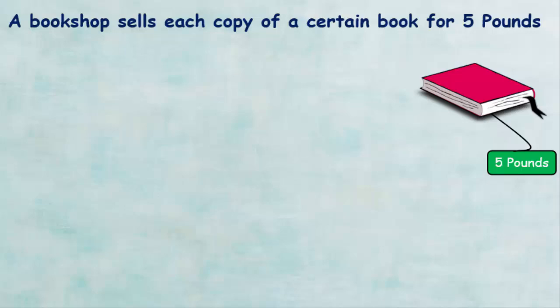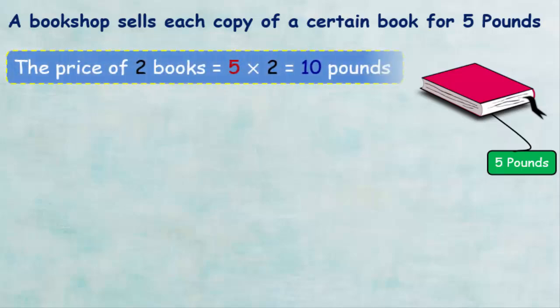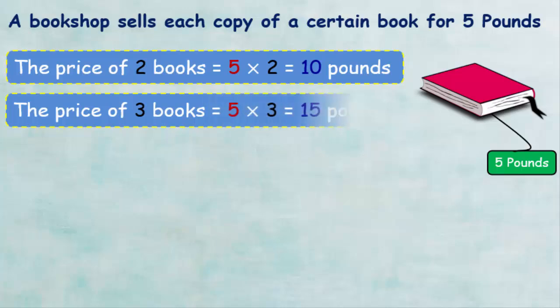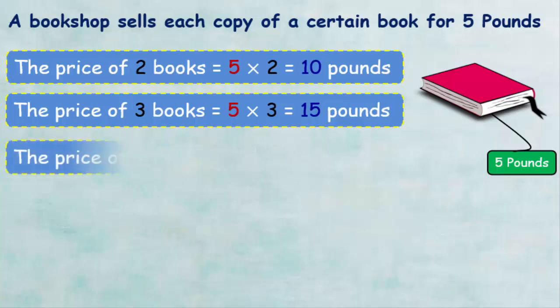Of course we can easily find out by multiplying the price of one book by the number of books. The price of two books is given by 5 times 2, which equals 10 pounds. The price of three books is given by 5 times 3, which equals 15 pounds.